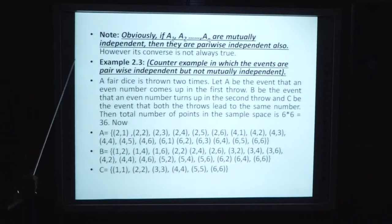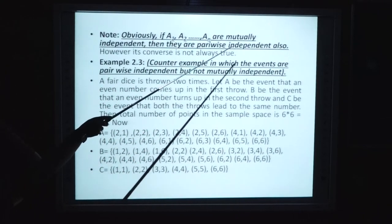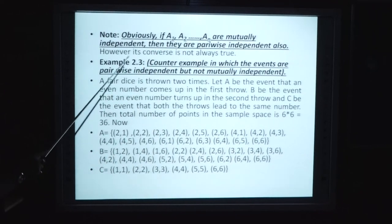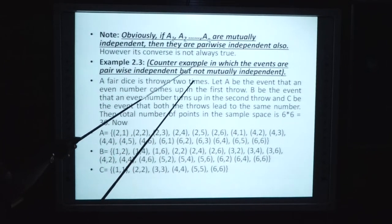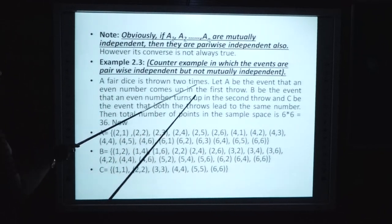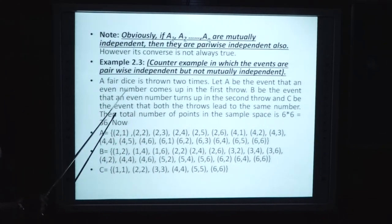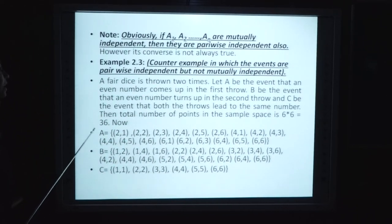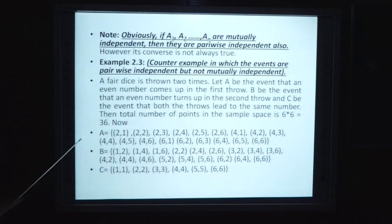Isse ek example ke through dekhte hain. Yahan pe kya show karna chah raha hai ki agar A1, A2 up to An mutually independent hain, to ye sabhi pairwise independent bhi hongi. Lekin inka jo opposite hai ki agar ye pairwise independent hain to wo mutually independent hongi - this is always not true. Counter example in which the events are pairwise independent but not mutually independent. Example: a fair die is thrown 2 times. Let A be the event that an even number comes up in the first throw and B the event that an even number turns up in the second throw, and C the event that both the throws lead to the same number. Total number of points in the sample space is 6 × 6 = 36.